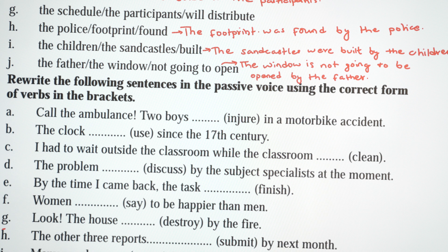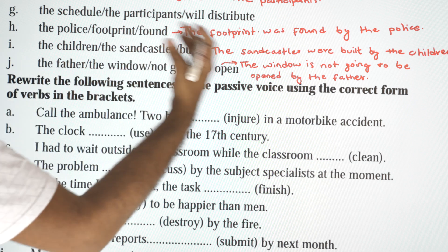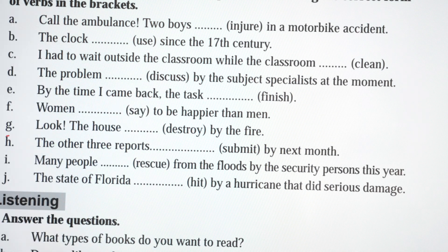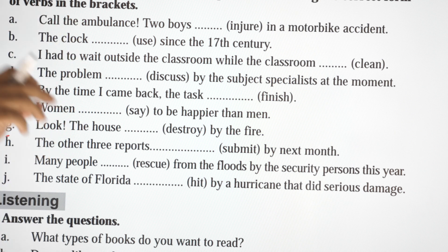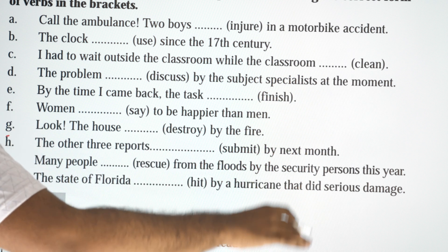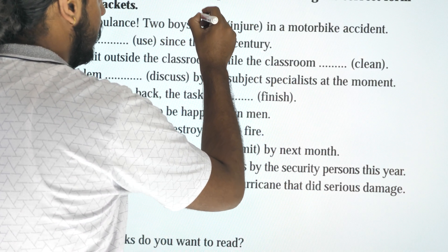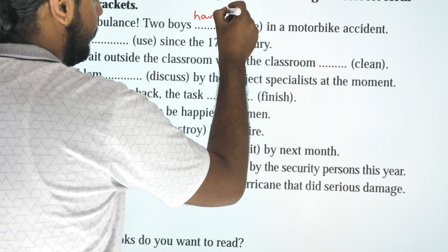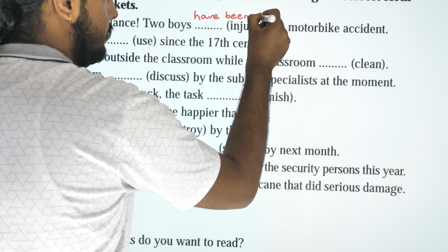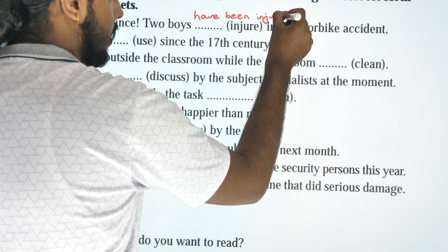Rewrite the following sentences in the passive voice using the correct form of the verbs. Call the ambulance — two boys — a motorbike accident. Boys is plural and present perfect, so: two boys have been injured in a motorbike accident.